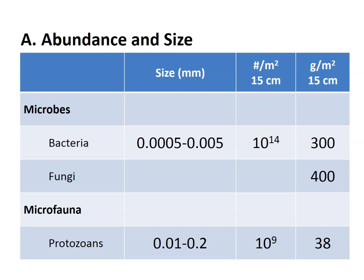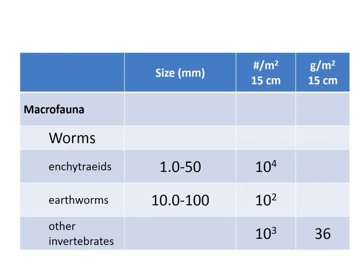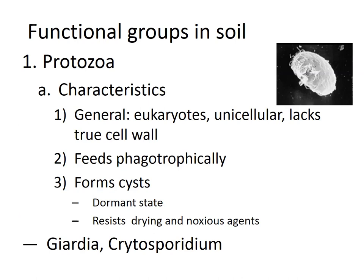Looking at abundance in soil, bacteria are dominant in terms of number. Micro-fauna, such as protozoa, are also abundant but less numerous than bacteria. Meso-fauna, including nematodes, springtails, and mites, exist in reasonable numbers but are less abundant than bacteria. Macro-fauna like earthworms and other invertebrates decrease in number as their size increases, so larger organisms have lower abundance in the soil environment.